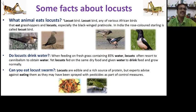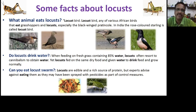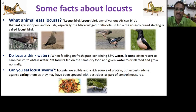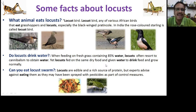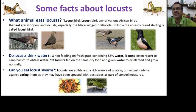Do locusts drink water? They cover hundreds of thousands of kilometers, passing through different countries, agricultural regions, and climate zones from humid to semi-arid environments. When feeding on fresh grass that contains 85 percent water, locusts often get enough moisture, but they can resort to cannibalism — eating their own species — to obtain water. However, if given dry food and water, they can drink normally and grow.